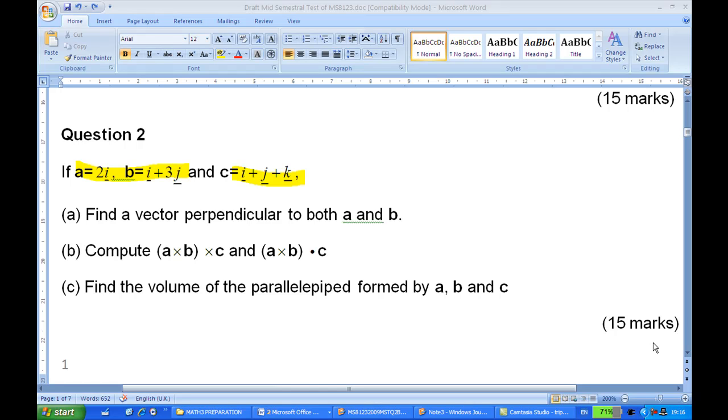Given a equals 2i, b equals i plus 3j, c equals i plus j plus k, we are going to find part c.